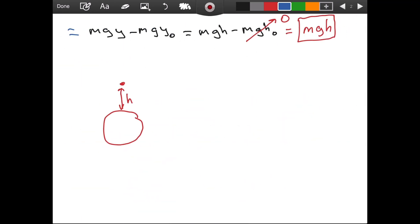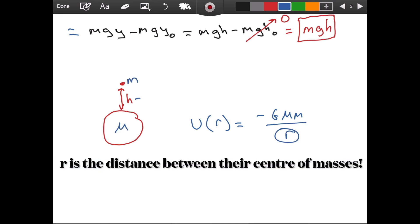And in that case, we use the general formula, which is as follows, which says this is equal to negative g m m divided by r. This is capital M, this is small case m. And r is the distance between them.